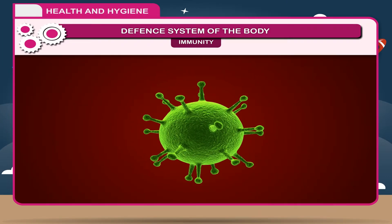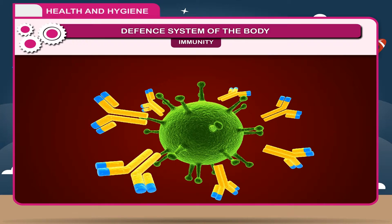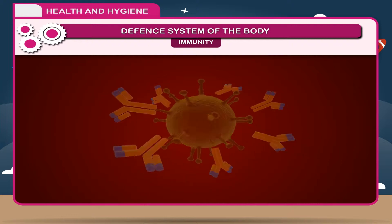The ability of a body to resist a particular disease is called immunity. When a foreign body called an antigen enters our body, the immune system makes proteins called antibodies. These antibodies attack the foreign body and by destroying them, defend us from diseases.